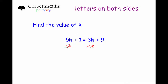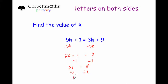5k + 1 minus 3k leaves us with 2k + 1. On the other side, 3k + 9 minus 3k leaves just 9. This is now a simple two-step equation: subtract 1 from both sides to get 2k = 8, then divide both sides by 2 to get k = 4.